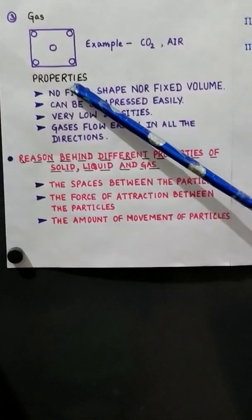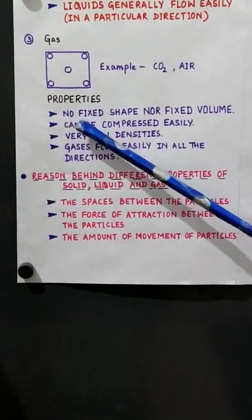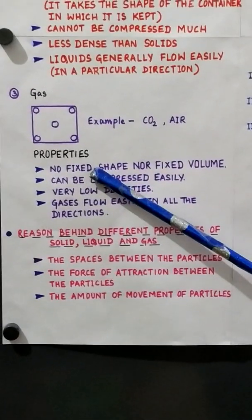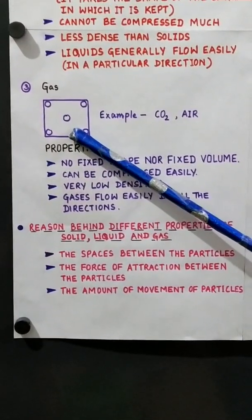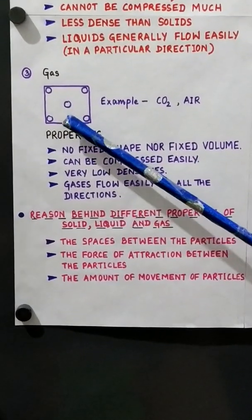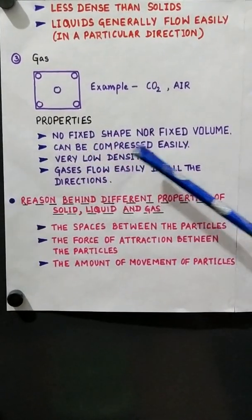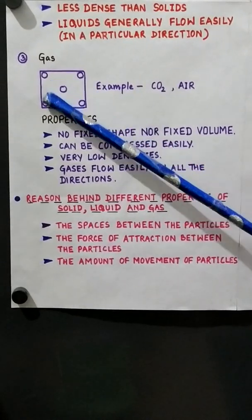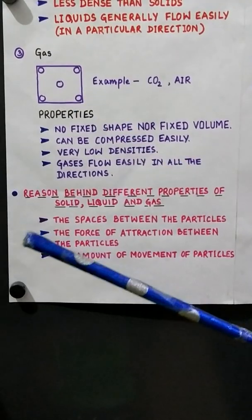The first property of gas is that it has no fixed shape nor fixed volume. Since the particles have very, very less force of attraction between them, it does not maintain a fixed shape or volume — it can move anywhere. Gases can be compressed easily since there is much space between the particles, and when you apply pressure on it, it can be compressed to a large extent.